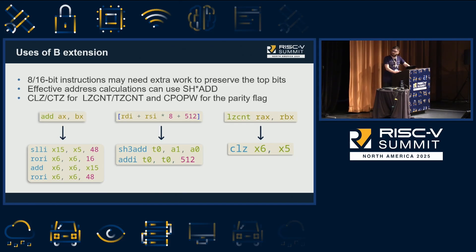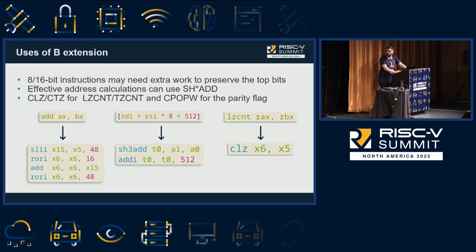Another use of bit manipulation is for what are called effective addresses in x86 — for those we can use the shift-with-add instruction. And finally, bit manipulation instructions in x86 also translate pretty nicely.